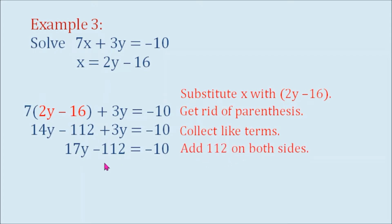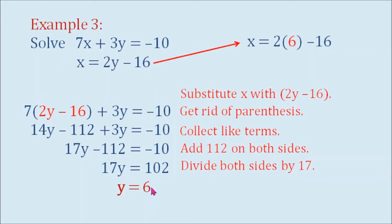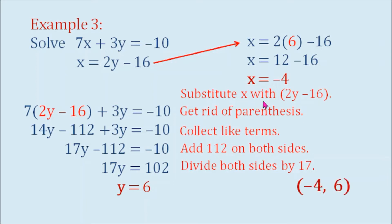Then we add 112 on both sides, so 17y equals 102. Then divide both sides by 17: y equals 6. We can solve for x by substituting y with 6 in our second equation, so it becomes x equals 2 times 6 minus 16. And 2 times 6 is 12, so x equals 12 minus 16, which equals negative 4. So our x is negative 4 and our y is 6. We can write our answer as coordinates (negative 4, 6).